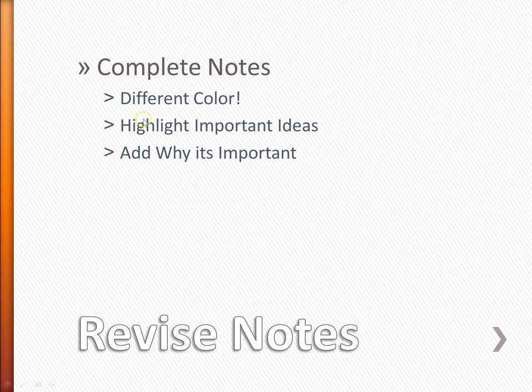As you go, add why those ideas are important in the different colored pen on the side of the notes. So highlight something and write over here why it was important — for example, 'this is why Cornell notes work.' Go ahead and pause the video for a good chunk of time and let students complete their notes. When students look mostly complete, then we'll move on.